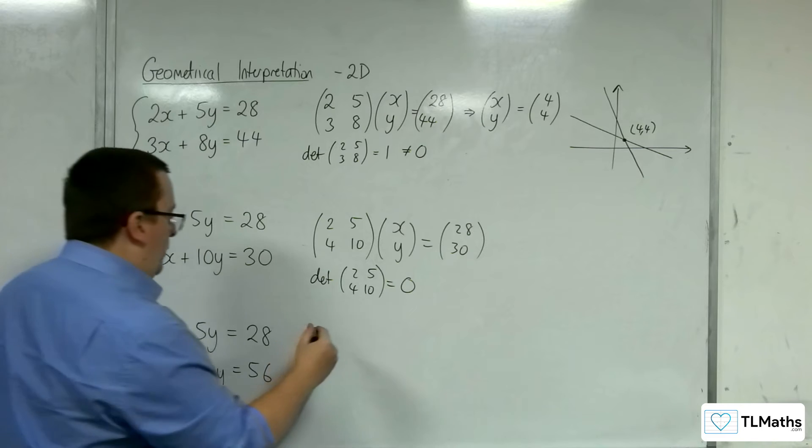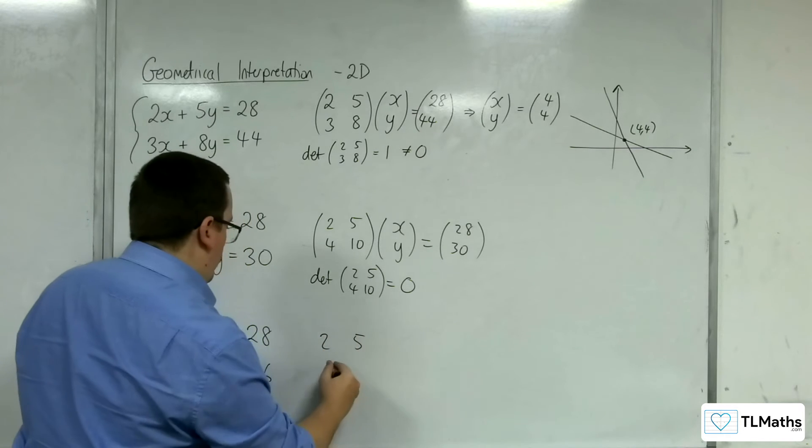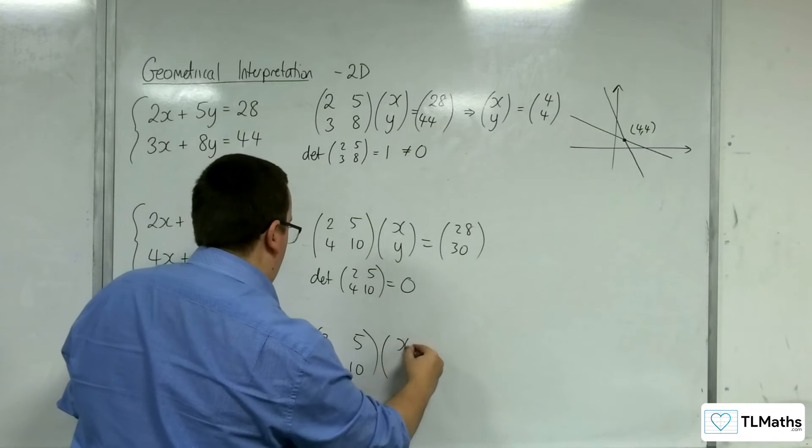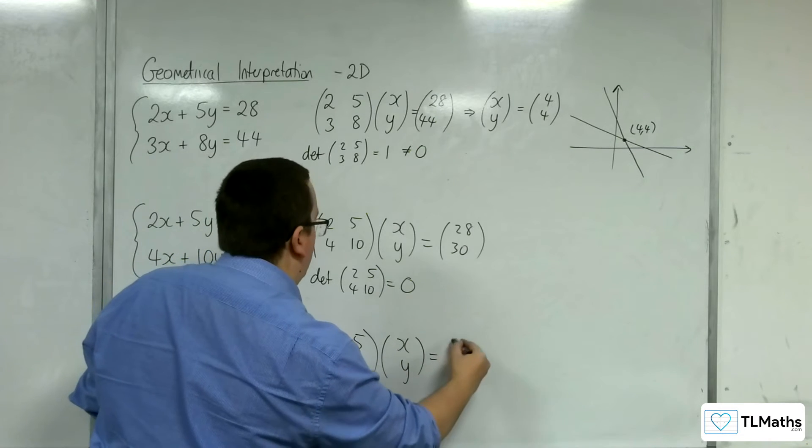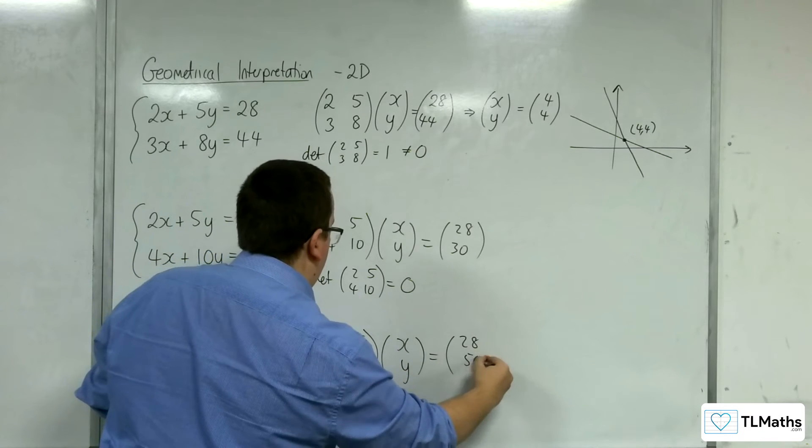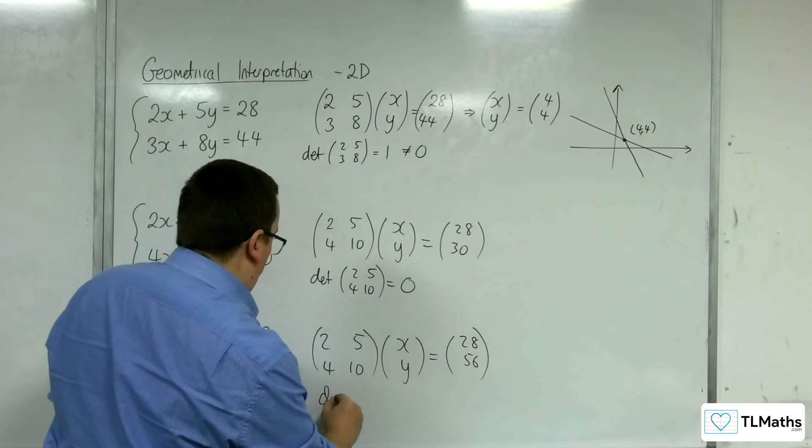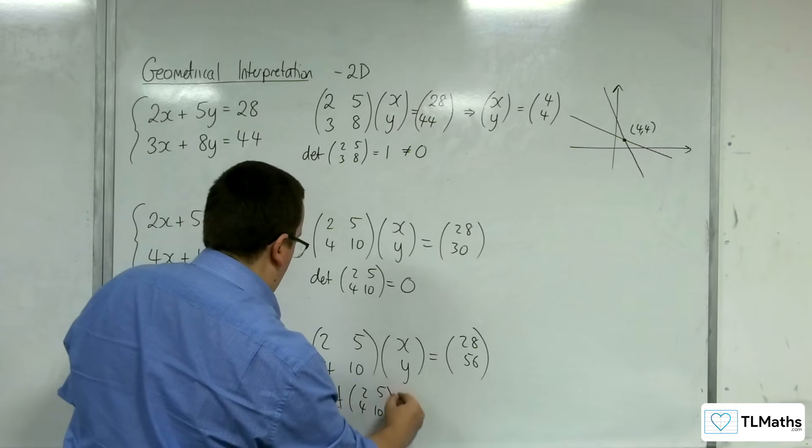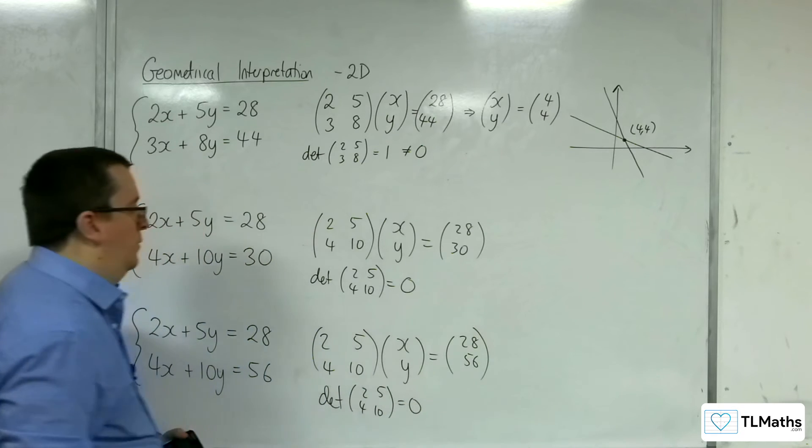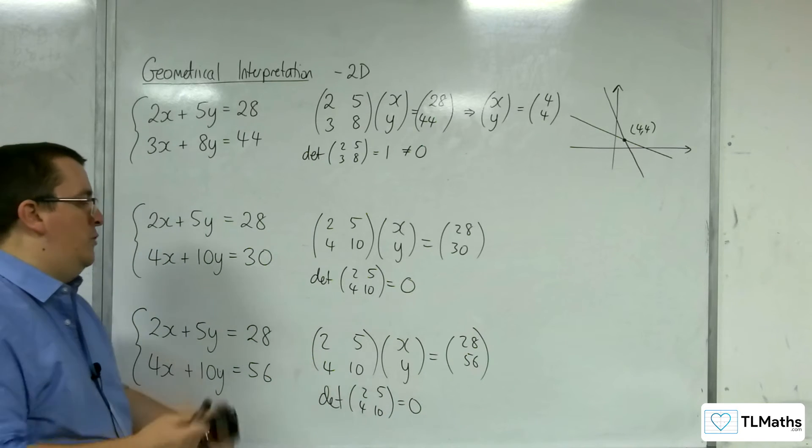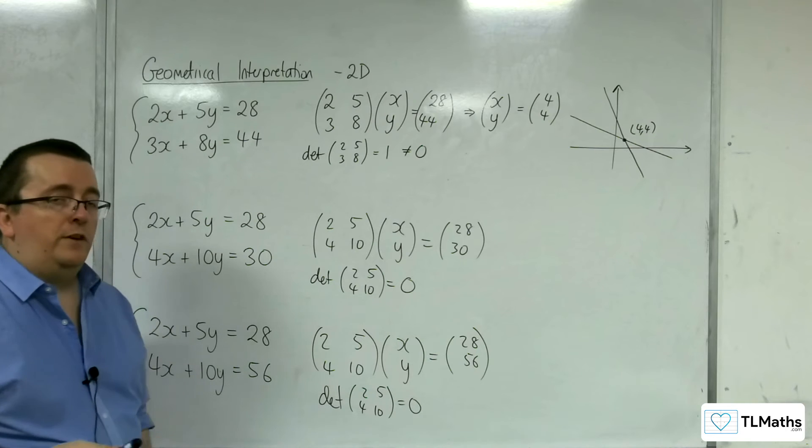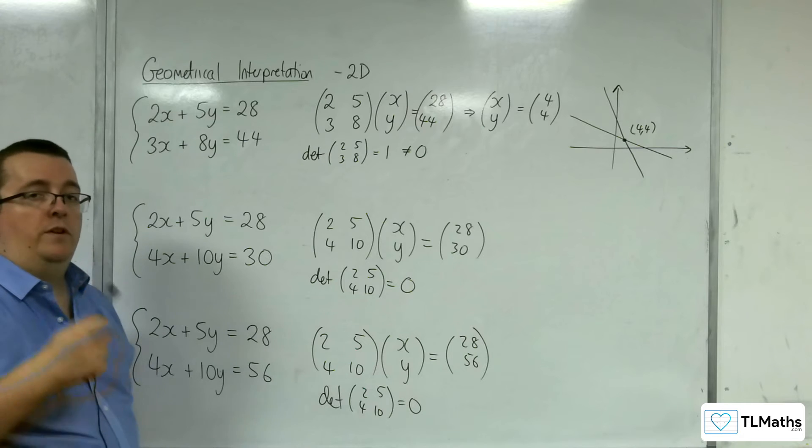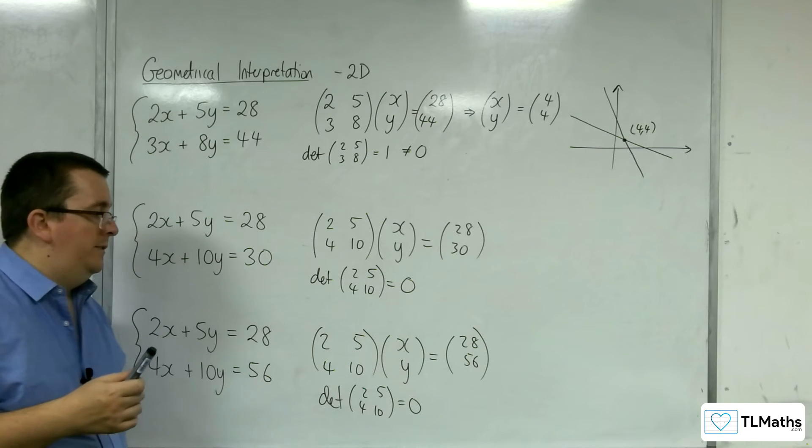If we looked at the matrix for this one, 2, 5, 4, 10, x, y is 28, 56, then, of course, we're going to get the same value determinant. So the fact that the determinant is 0 is an identifying feature that you're not going to get a unique solution, a distinct coordinate of intersection for the two lines.